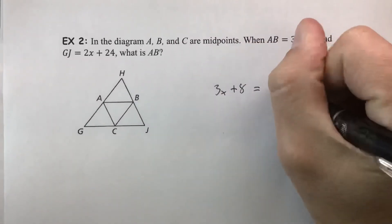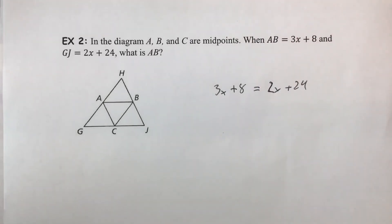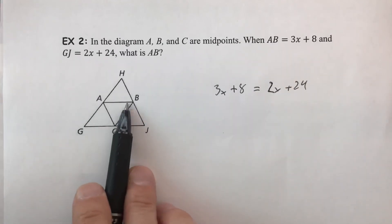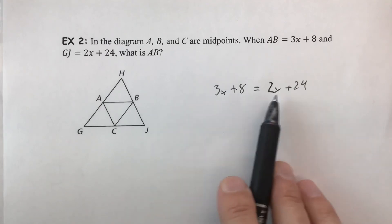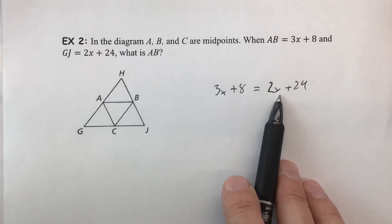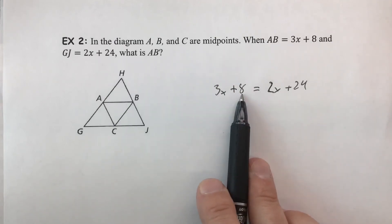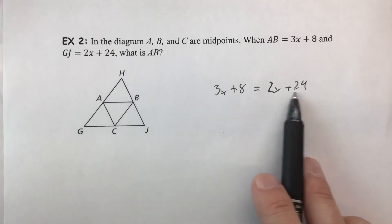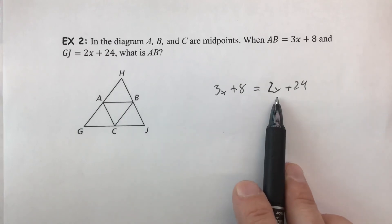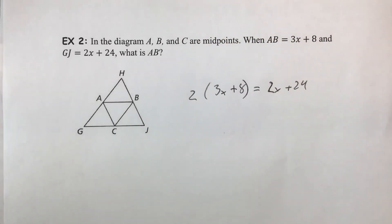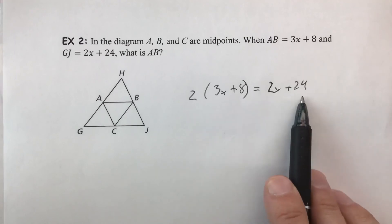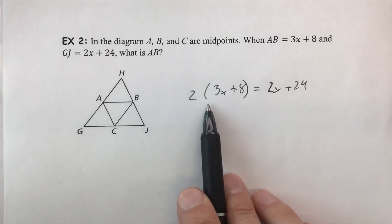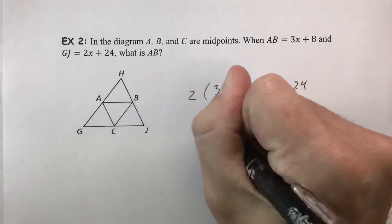Suppose we just set the two expressions equal — but that's actually false, because AB is clearly not the same length as GJ. However, starting with a bad equation gets us thinking about how they really compare. The midsegment AB is half the length of GJ, so we need to double the midsegment side. Multiplying both terms of AB's expression by 2 gives us 2(3x + 8), which distributes to 6x + 16.